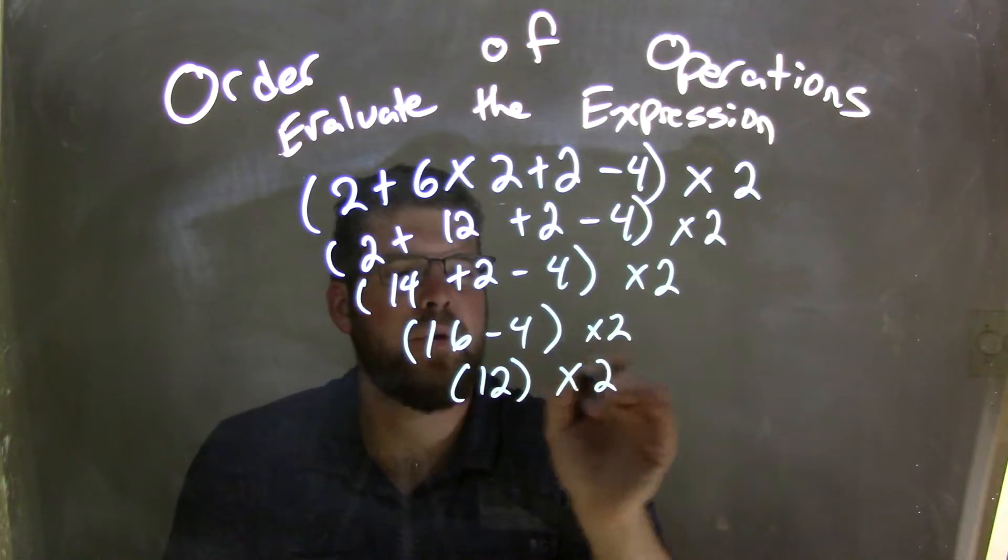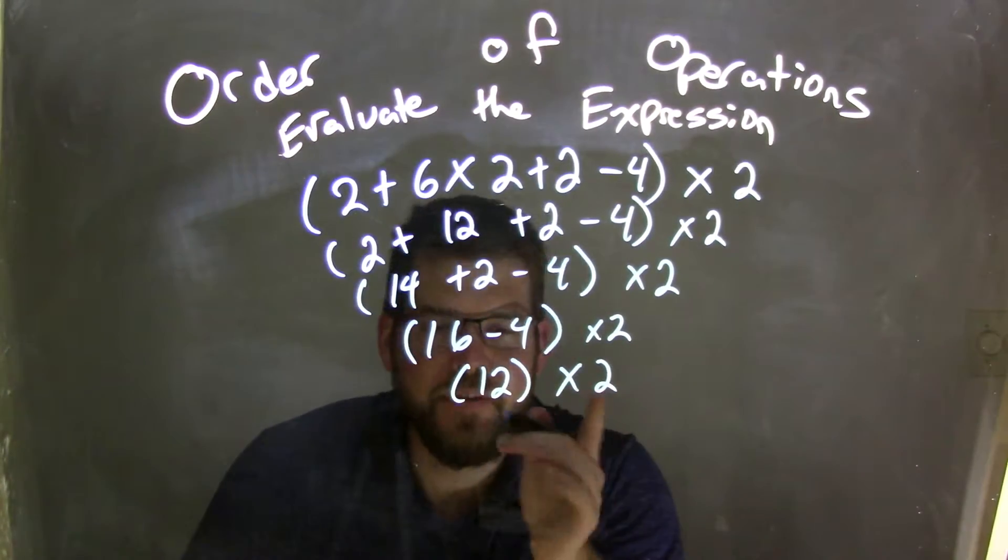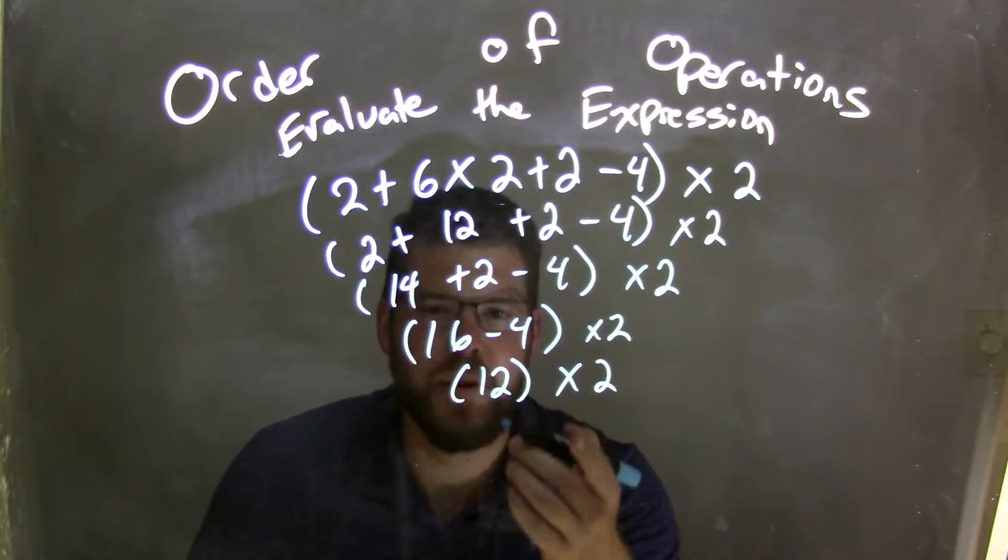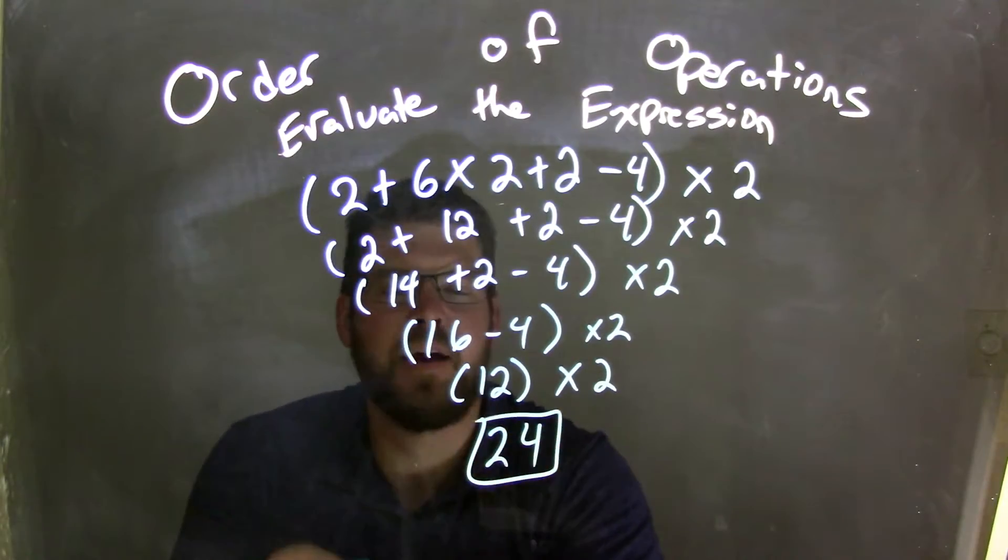Now I have everything in the parenthesis simplified. What's left is multiplied by that 2, and 12 × 2 is 24. There's our final answer.